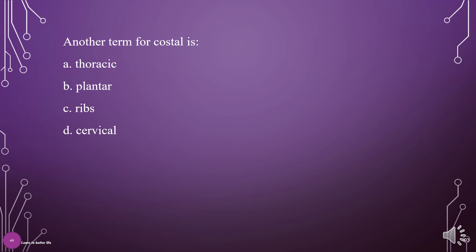What is another term for costal? A. Thoracic, B. Plantar, C. Ribs, D. Cervical. The answer is C: Ribs.